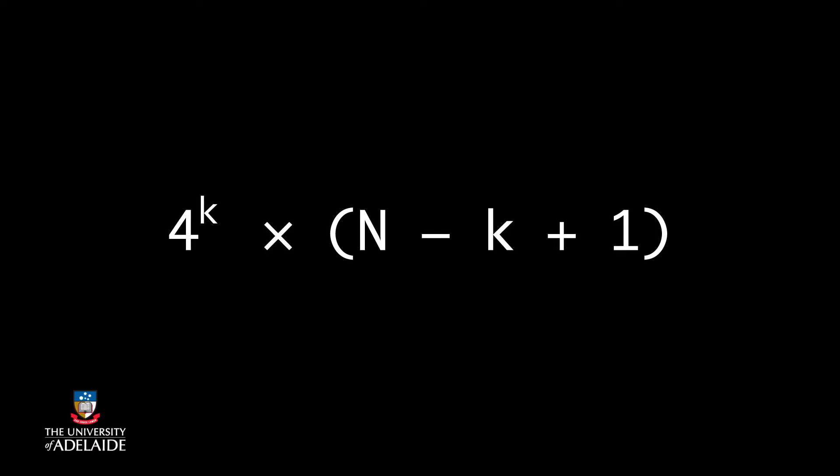Before you start implementing this in R, you should pause and consider how many steps will this take. The number of k-mers is 4 to the power of k. Each time you check a k-mer, you loop through DNA. This procedure is n minus k plus 1 steps. That gives a total of 4 to the power of k times n minus k plus 1 steps.